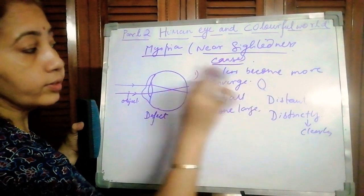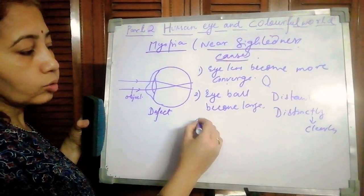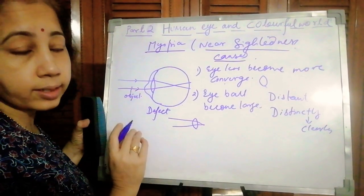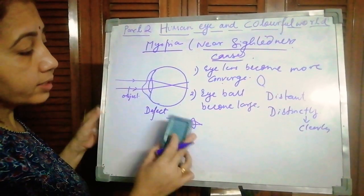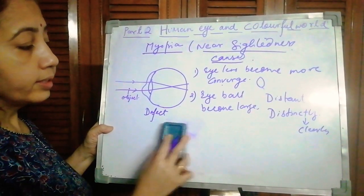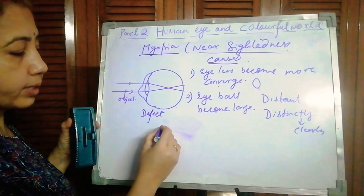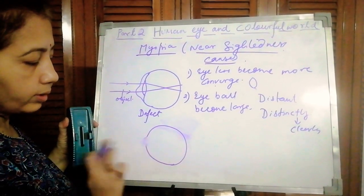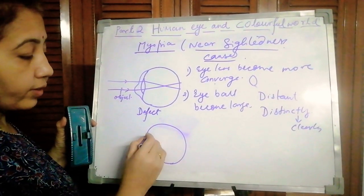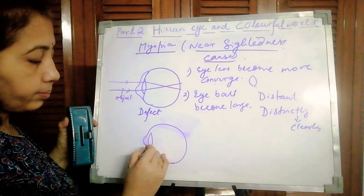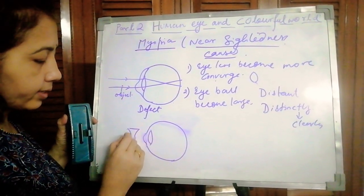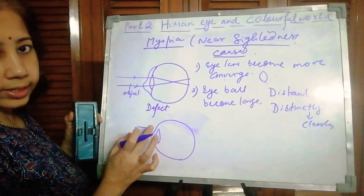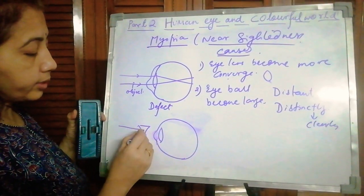The eye lens becomes more converging — it contracts more than needed. The second cause is that the eyeball becomes large. These are the two causes of this defect. This defect can be corrected by using a concave lens. Where there is a cave in the lens, that is called concave.